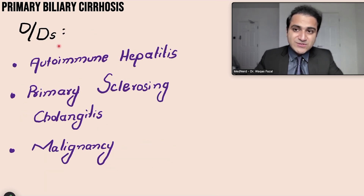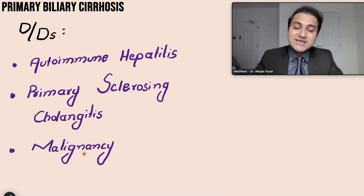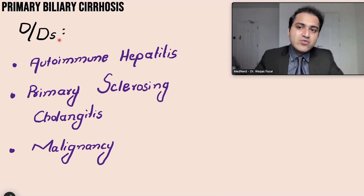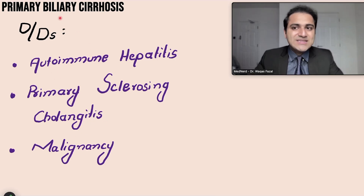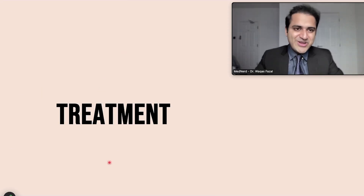The differential diagnosis for primary biliary cirrhosis includes autoimmune hepatitis, primary sclerosing cholangitis, and malignancy — which can also cause ductal obstruction. You need to rule out these conditions whenever making a diagnosis of primary biliary cirrhosis.